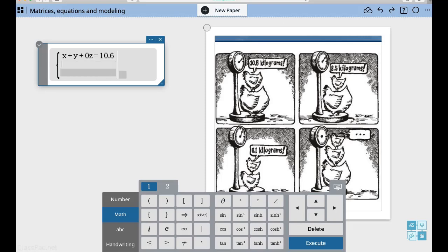On the second one, I've got a large chicken and a very small chicken. So that's a large plus no medium plus one of the small, and that's giving me a total of 8.5. And then finally, my last equation has no large chickens. It has a medium and a small, and those end up giving me a total of 6.1.